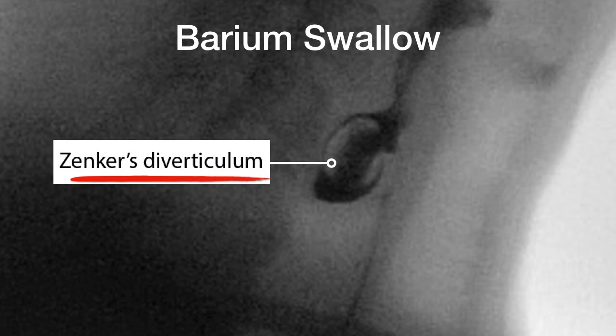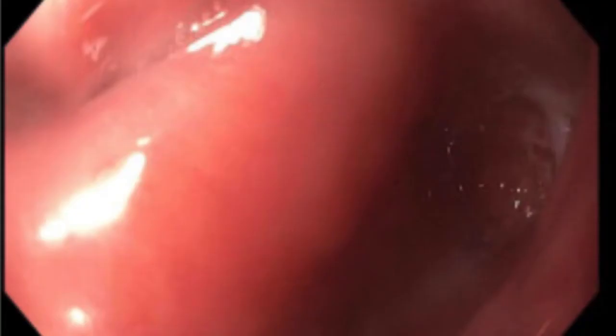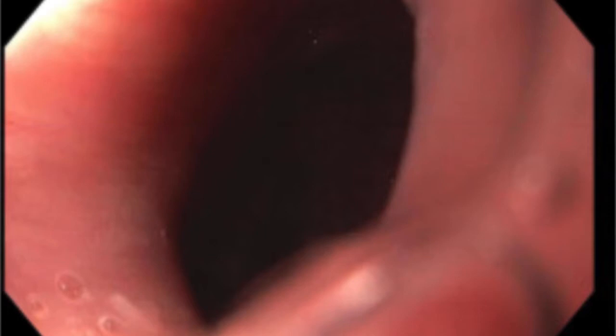When you perform endoscopy in an elderly patient you have to be very careful not to perforate the Zenker's diverticulum. When you go behind the larynx you will first encounter a small pouch — this is the Zenker's diverticulum. To the left side of the pouch you see the septum, and as you go over the septum you enter the esophagus.